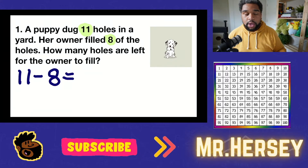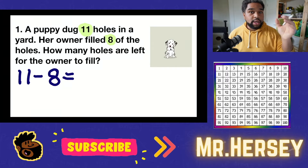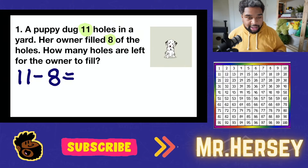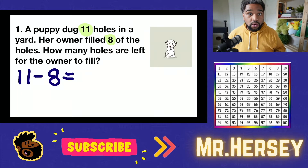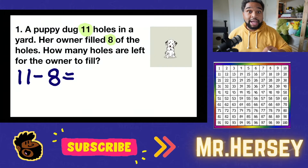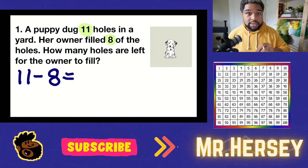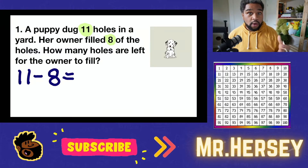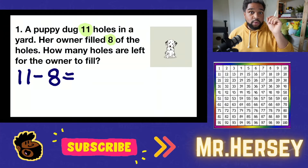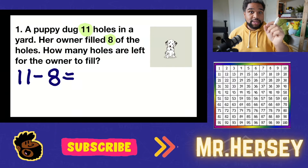We're going to be using the modeling strategy, and what that means is we're going to draw 11 dots to represent the holes that the puppy dug. Then we are going to take eight of those dots away to represent the holes that the owner filled in. That way we'll be able to count what's left, and that will give us our answer.